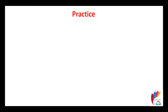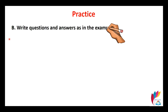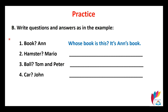Exercise two — write questions and answers as in the example. The first one is already answered: 'Whose book is this?' We also have a hamster and the person is Mary.